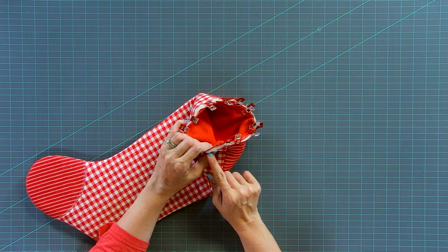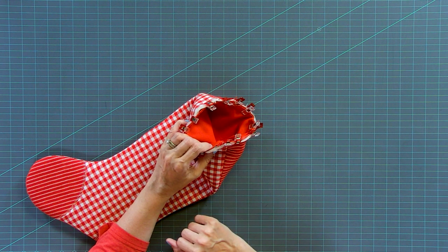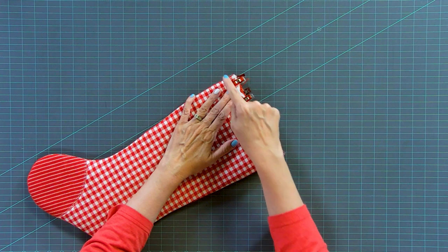And we're gonna remove the bed of our sewing machine. So it makes it a little bit easier. And again, a quarter inch seam.